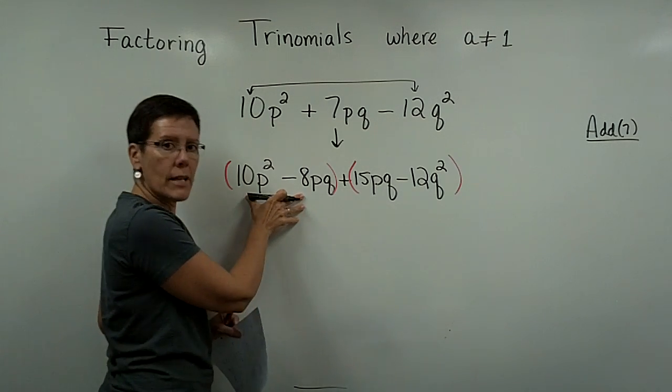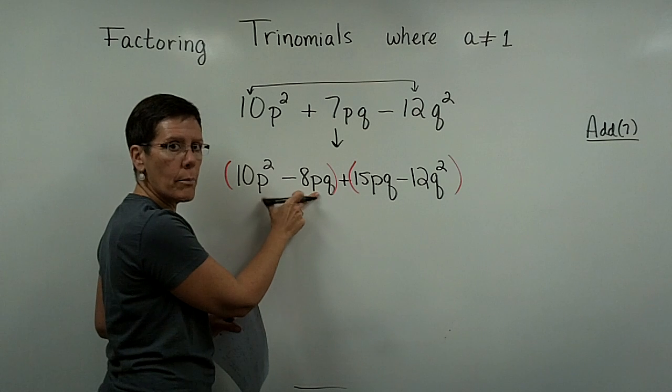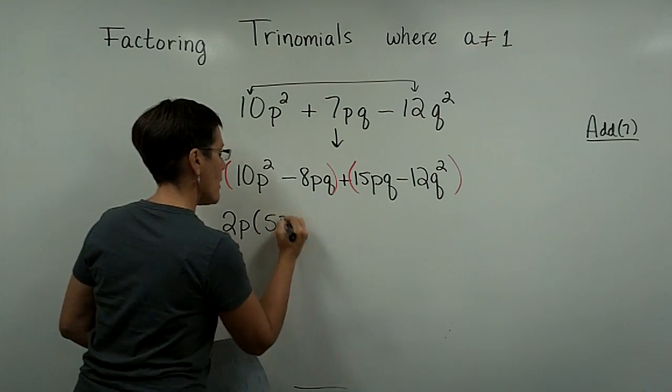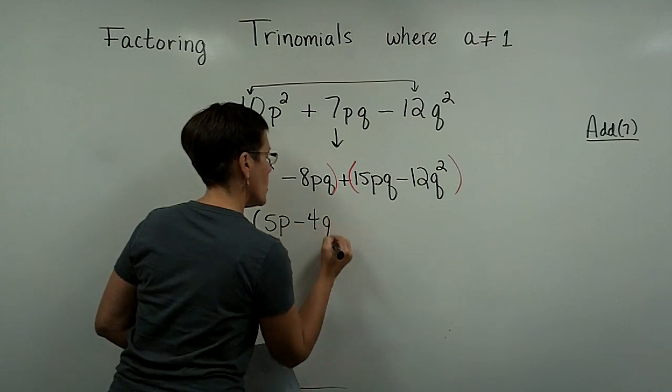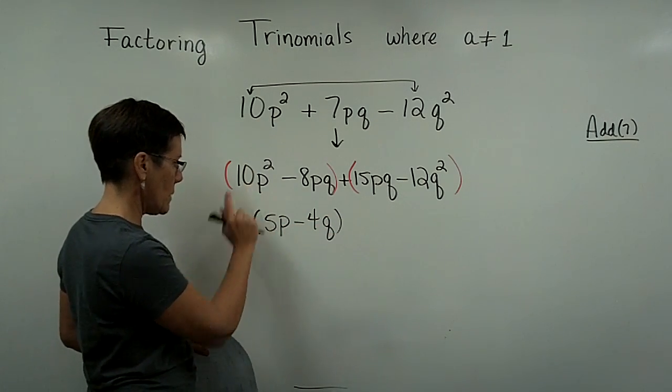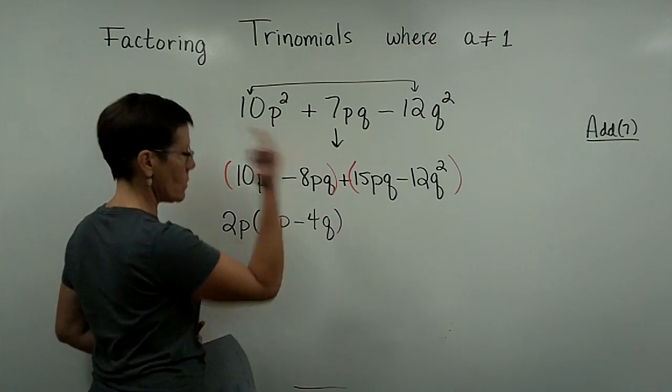And then let's go ahead and group the first two and group the last two. And so right here, I have a common factor of 2, and I can get a p out of both of these. So 2p can come out of each of these. So I have a 5p minus 4q. And I always pause, check and make sure I did that right. So this is 10p squared, and that product is a minus 8pq. Good. I did all right.